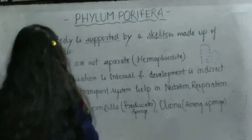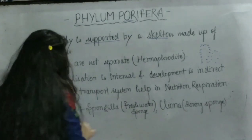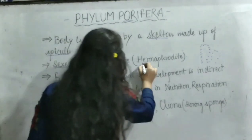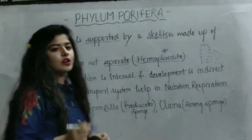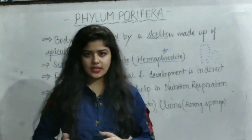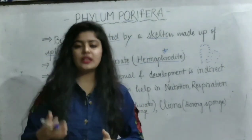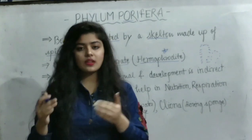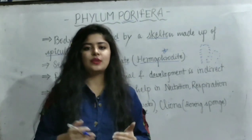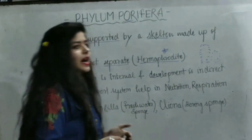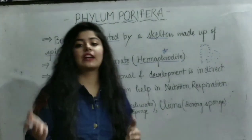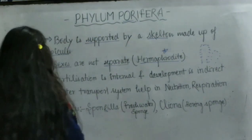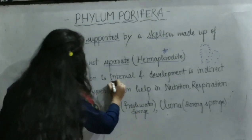Next point: sexes are not separate. The male and female parts are both present in the same body, which is called hermaphrodite. In one individual, the body produces both eggs and sperm. Both eggs and sperm are produced from sex cells called archaeocytes. The fusion of egg and sperm is called fertilization, and after fertilization, a zygote is formed.